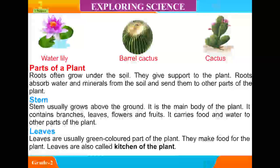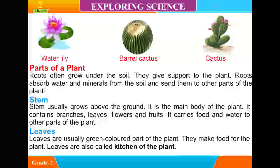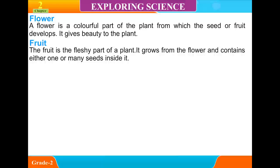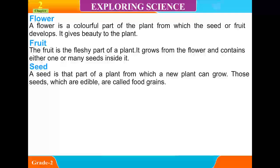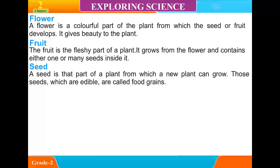Leaves are usually green colored parts of the plant. They make food for the plant. Leaves are also called the kitchen of the plant. A flower is a colorful part of the plant from which the seed or fruit develops. It gives beauty to the plant. The fruit is the fleshy part of the plant. It grows from the flower and contains either one or many seeds inside it. A seed is that part of a plant from which a new plant can grow. Those seeds which are edible are called food grains.